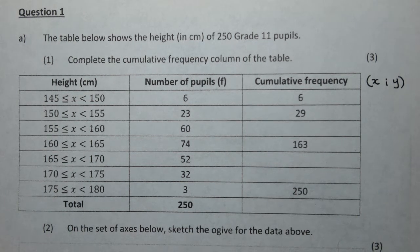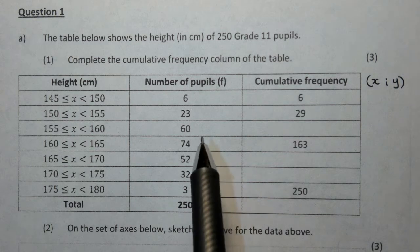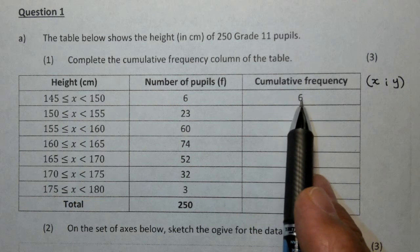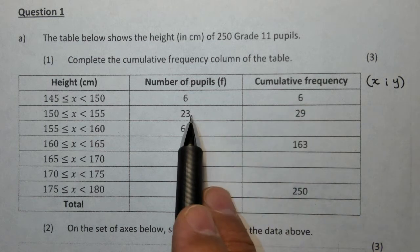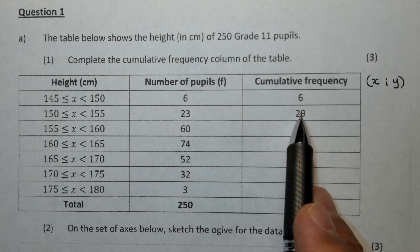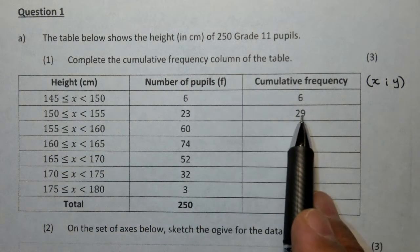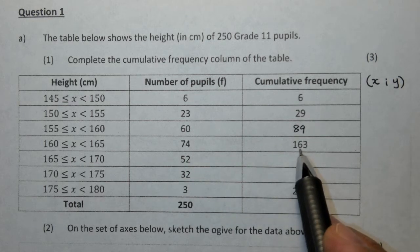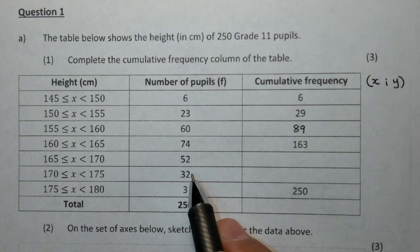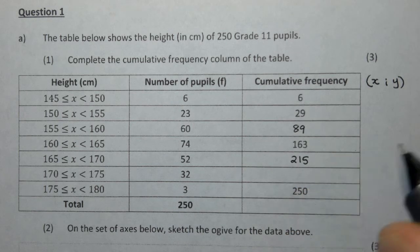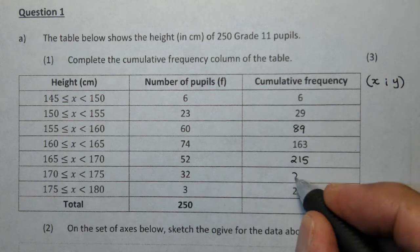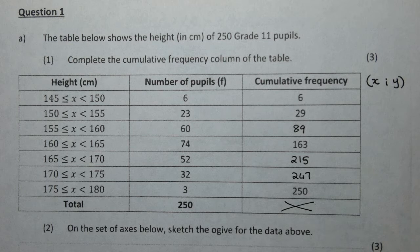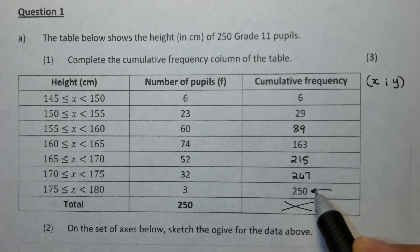Remember, your cumulative frequency starts at 6 over this specific class interval. To get the next frequency that accumulates, you say 6 plus 23 is 29. The question asked us to complete the cumulative frequency, so 29 plus 60 is 89, 89 plus 74 gives you 163, 163 plus 52 gives you 215, then add 32 to get 247, and finally add 3 to get 250.